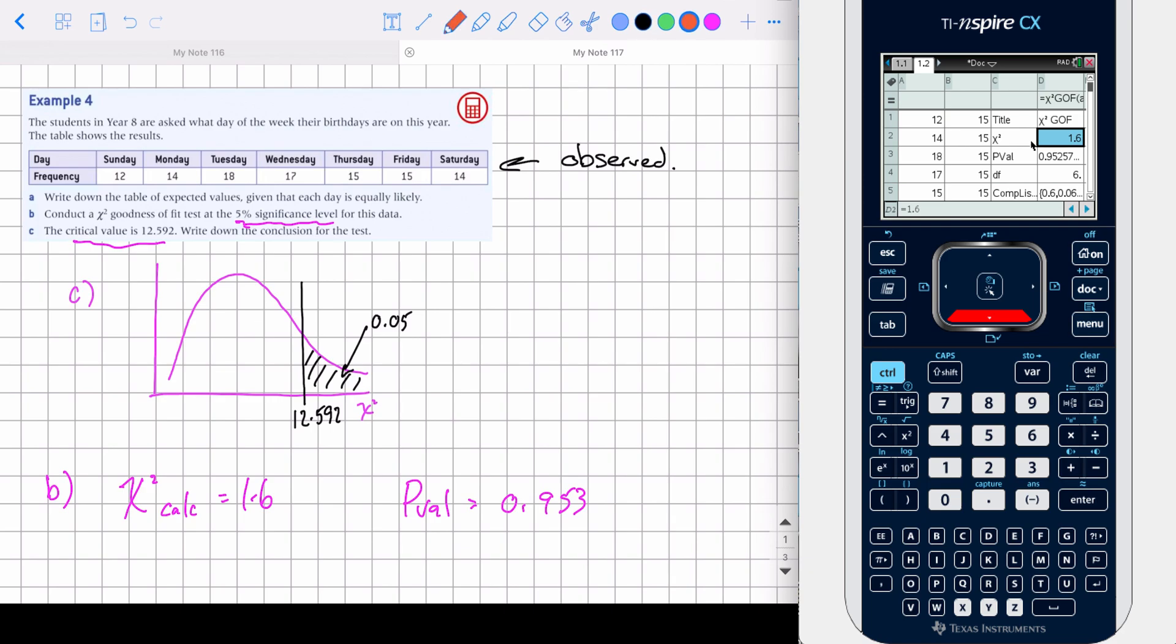First of all, I'm going to use the calculated value and compare it to the critical. If this is our scale, and this is 0 to 12.5, 1.6 is going to be around here somewhere. So we are in the do-not-reject-H-zero area.